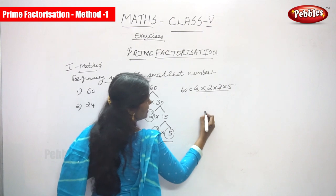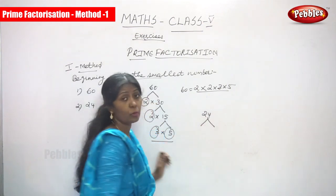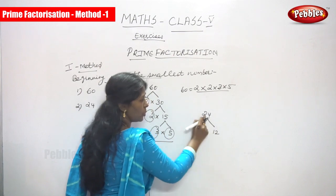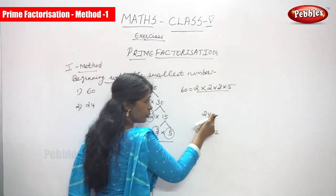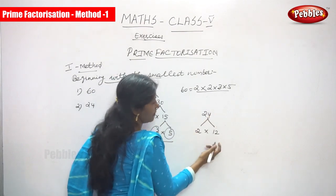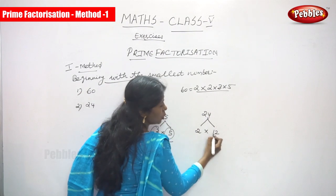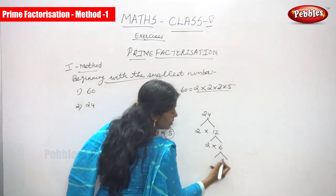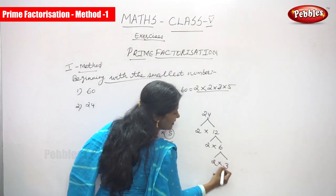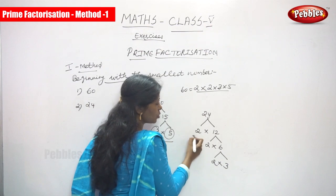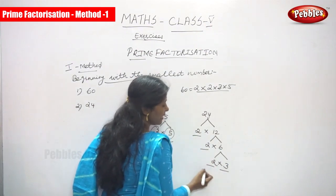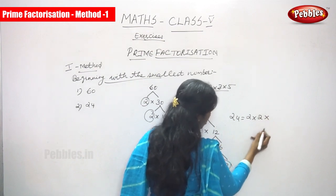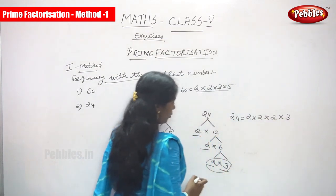Next sum is 24. Start with the smallest number: 2 into 12 gives 24. Divide 24 by 2 to get 12. Then 12 divided by 2 gives 6, so 2 into 6 gives 12. Then 6 divided by 2 gives 3, so 2 into 3 gives 6. The numbers are 2, 2, 2, and 3.